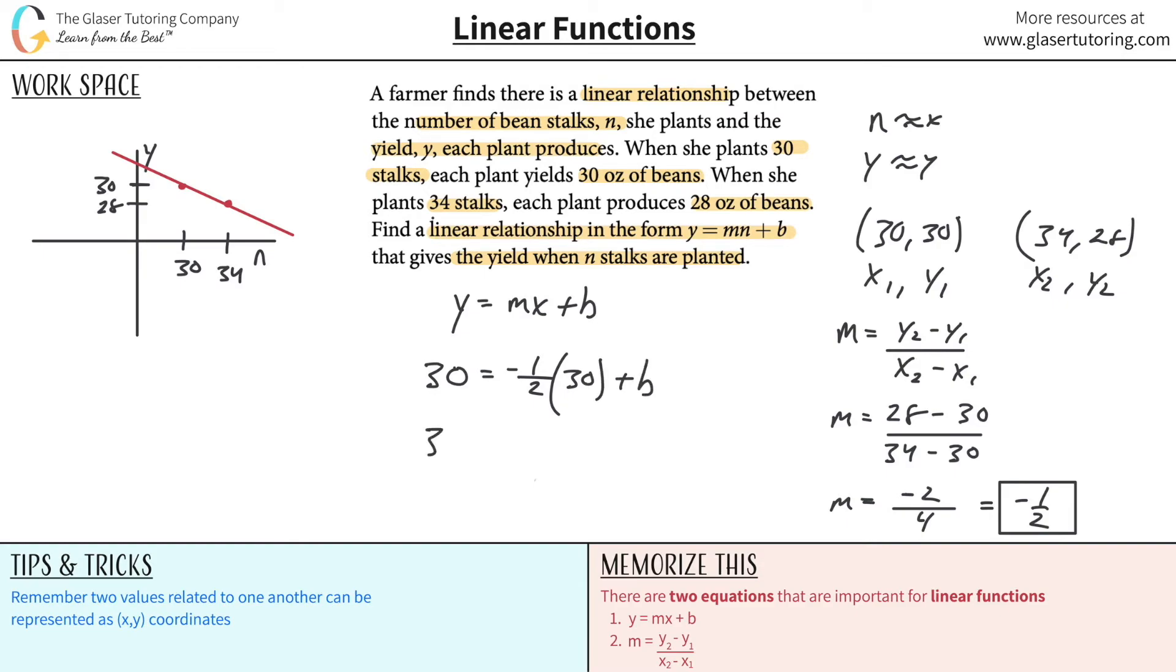So this is going to be 30, right? Equals, now what's one half of 30? It's 15, right? And that's negative. So negative 15 plus b. To solve for b, we've got to add the 15 over to the left hand side. And lo and behold, voila, 45 is equal to b. And guess what, ladies and gentlemen? We got everything we need.